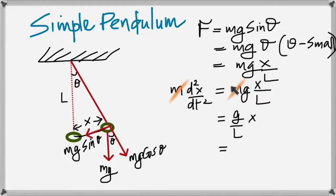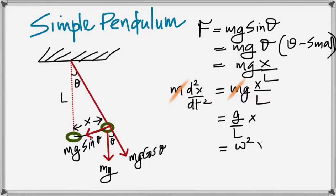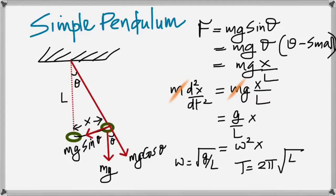The general SHM equation is d²X/dt² = −ω²X, and comparing, ω² = g/L, so ω = √(g/L). Therefore the time period is T = 2π/ω = 2π√(L/g). That's the equation for the time period of a simple pendulum.